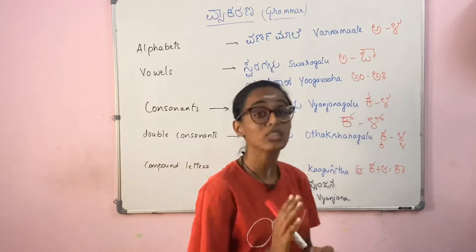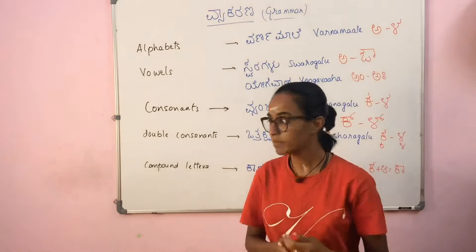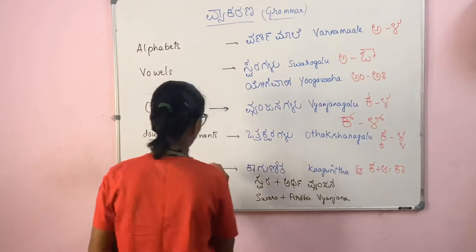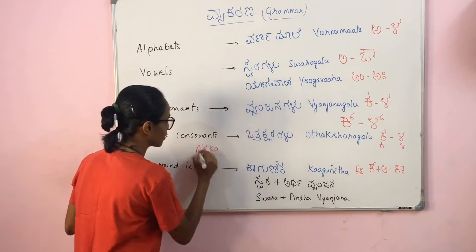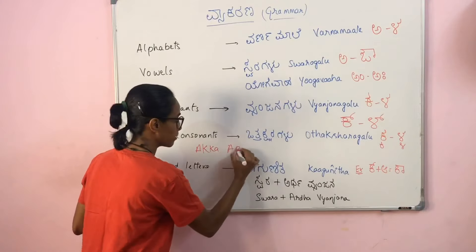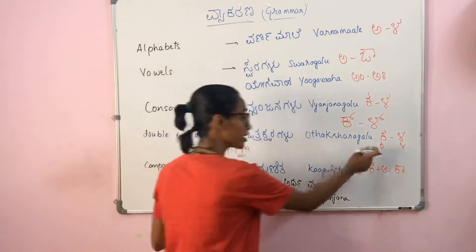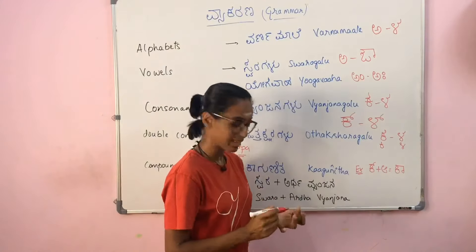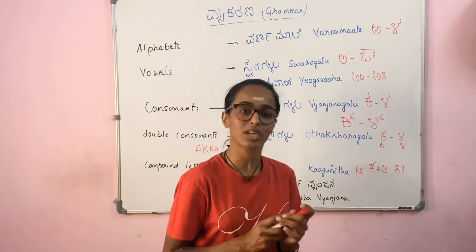Next is vatthakshara — double consonants. For example, in Kannada we use two letters together: akka, appa. So these double letters are called vatthakshara in Kannada — double consonants.